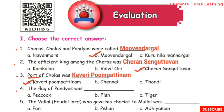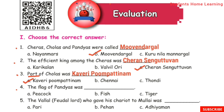Fourth one: The flag of Pandyas was Dash. What was the flag of Pandyas? Answer: Fish. Fifth one: The Vulval who gave his chariot to Mullai was Dash. Who gave his chariot to Mullai? Answer: Party.